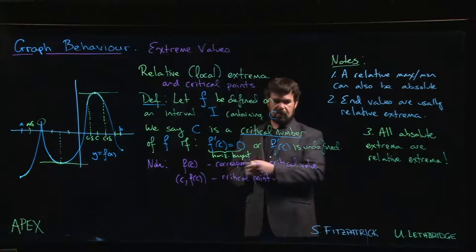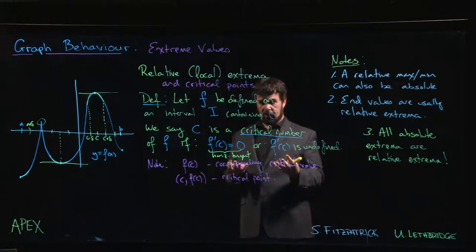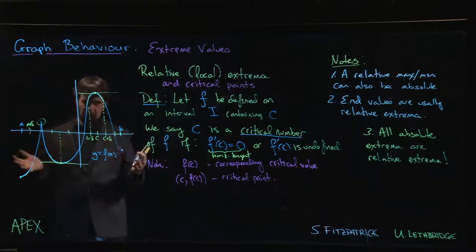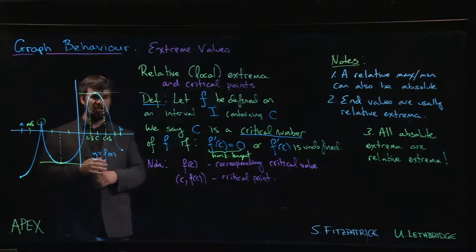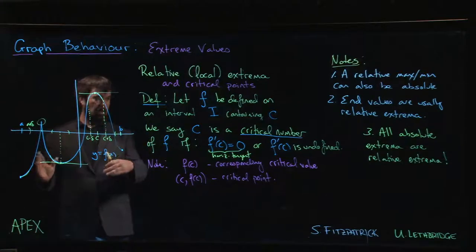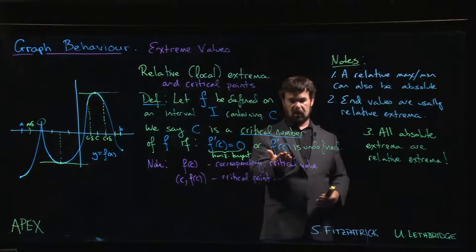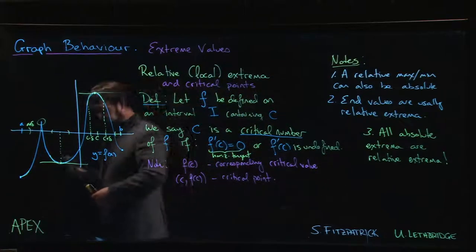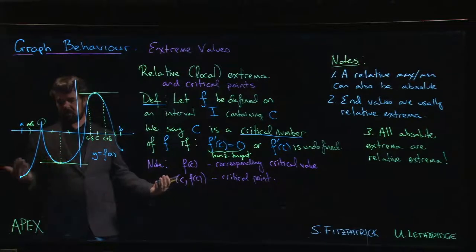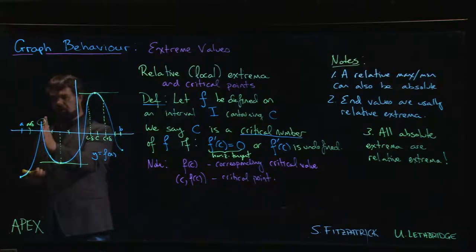How can it happen that f prime of C is undefined? There are a couple of possibilities. One is that C could be a point of discontinuity, but the typical context we're looking at is a continuous function on a closed interval. Alternatively, the derivative can be undefined because you just don't have a tangent line at that point — typically that means a corner, a cusp, or possibly a vertical tangent, just like we have here, where this is a cusp that also involves a vertical tangent.